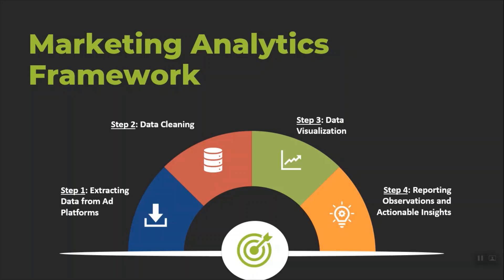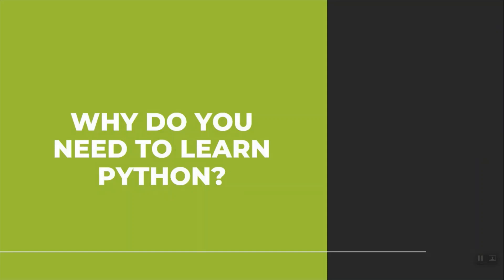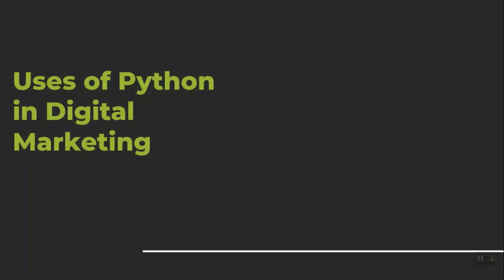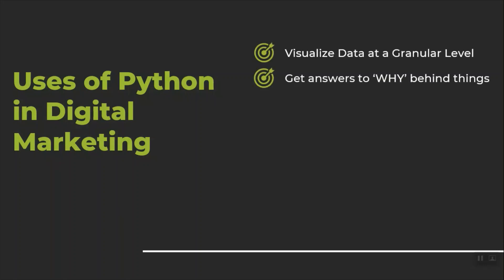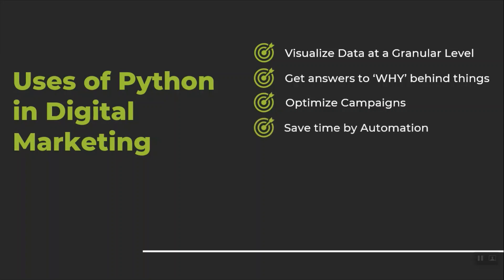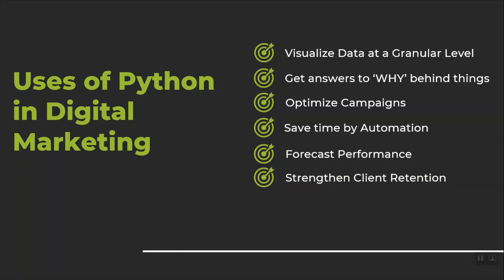One last thing we need to understand before we actually start with the course is why we need to use Python. Python has various uses in digital marketing: it helps in visualizing data at a granular level, it helps to get answers to the why behind things, it helps in optimizing campaigns, you can save a lot of time by automating the mundane stuff you do day in and day out, you can do a forecast of campaign performance, and with improved campaign performance and better visualization of data, you can share tons of insights with your clients. Clients love when the digital agency does something like this — it helps you strengthen client retention.